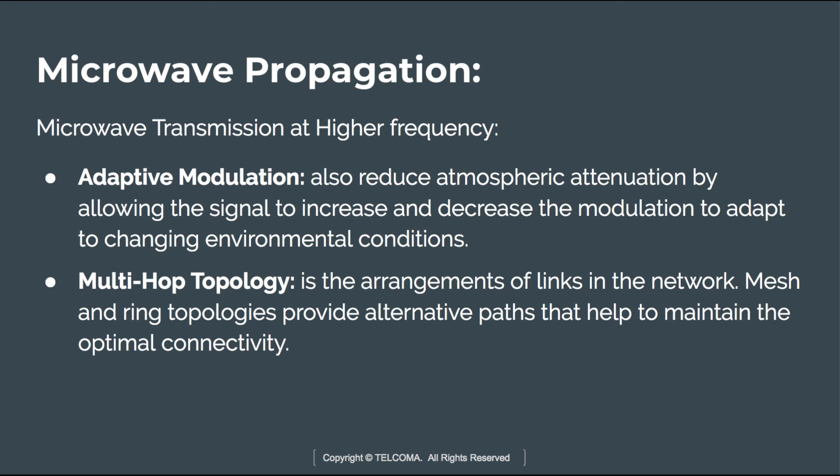The next part is multi-hop topology. Multi-hop topology refers to the arrangement of links in a network. Mesh and ring topologies provide alternative paths that help maintain optimal connectivity. If a storm affects one link, traffic can be rerouted through another link in the topology. These are various approaches used at higher frequencies to reduce signal attenuation.